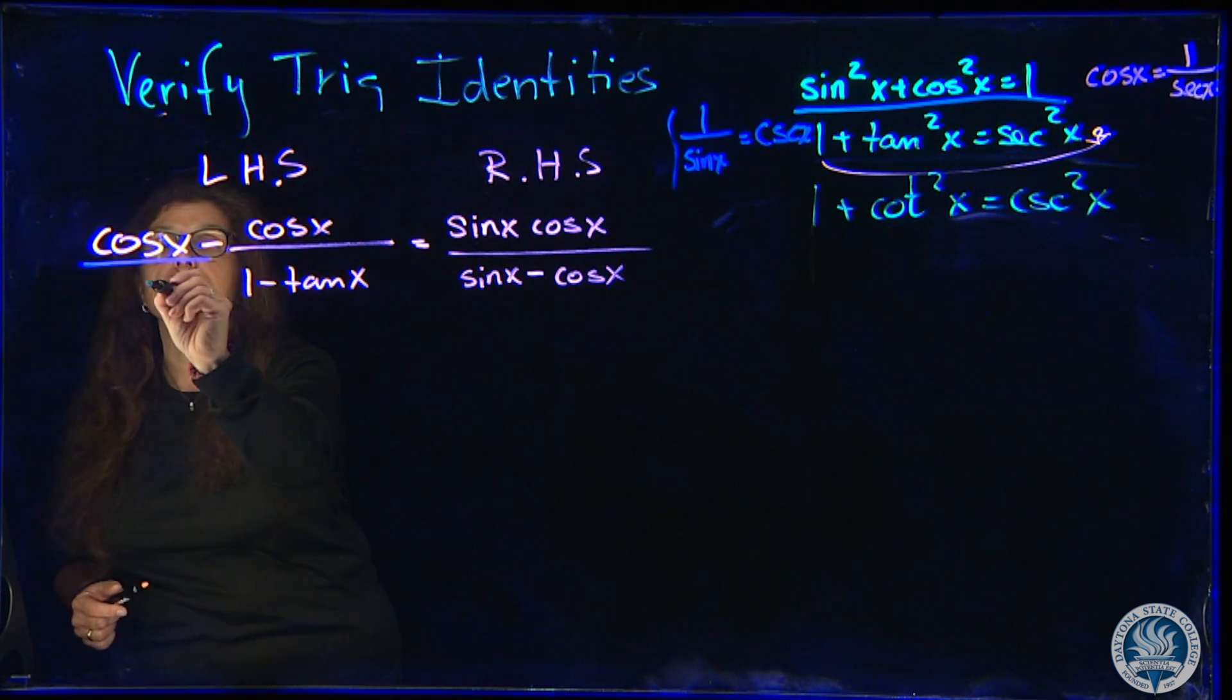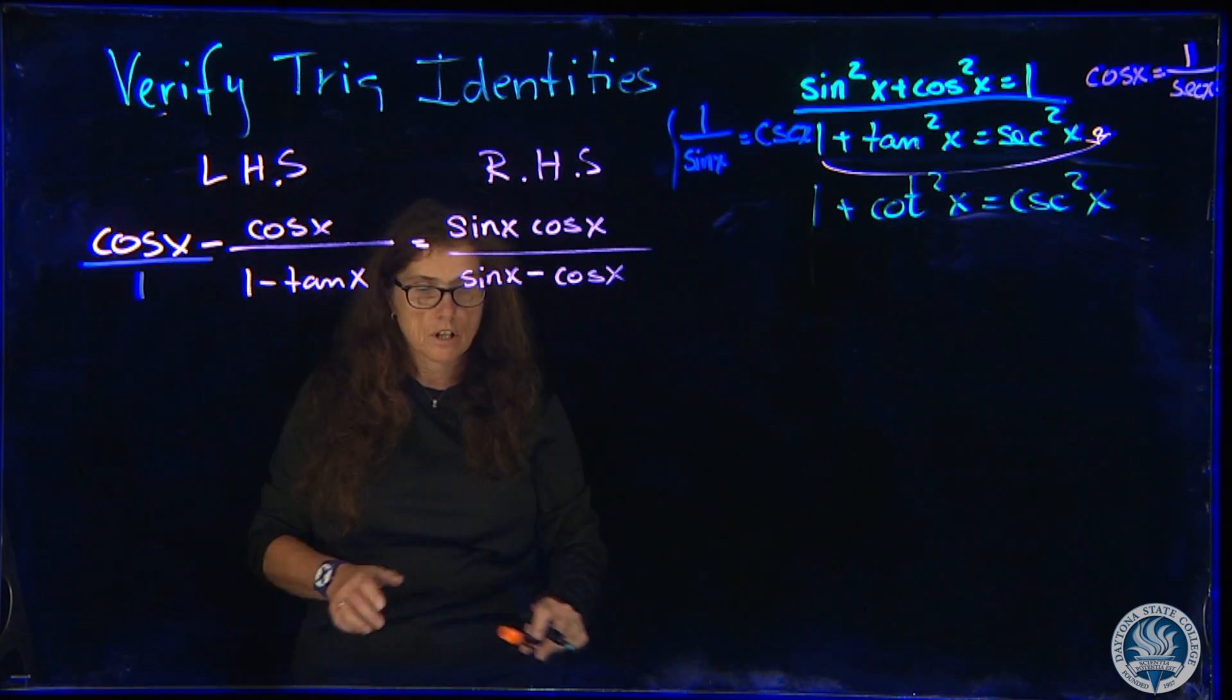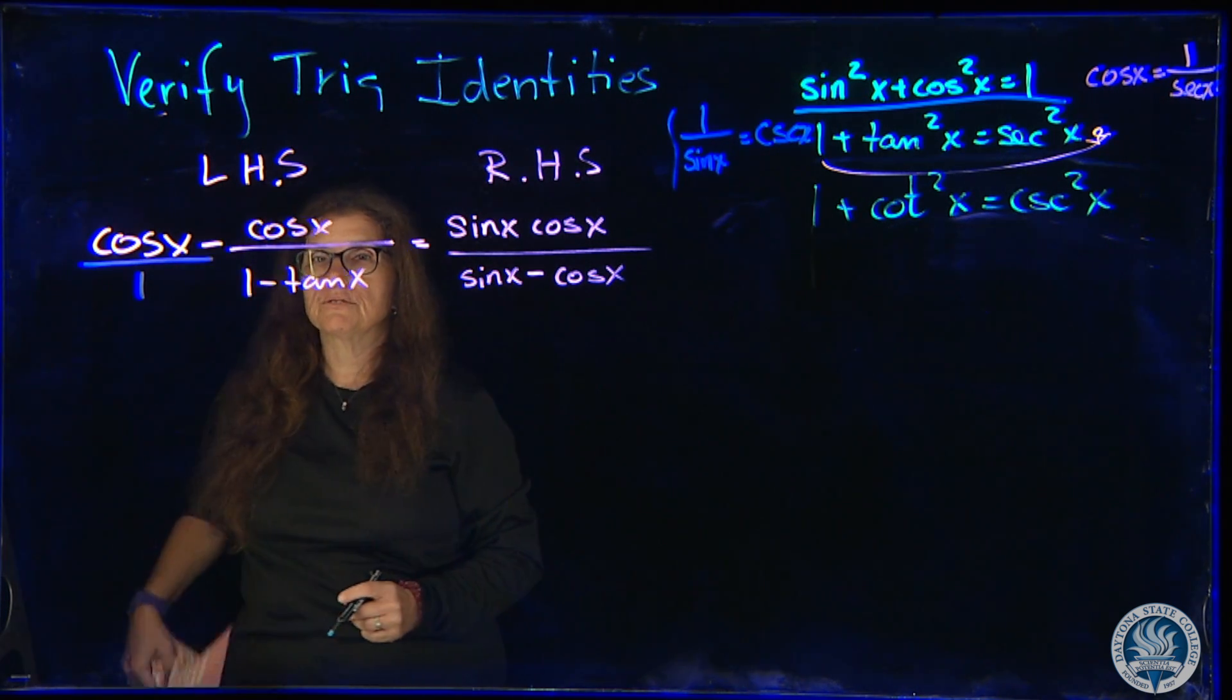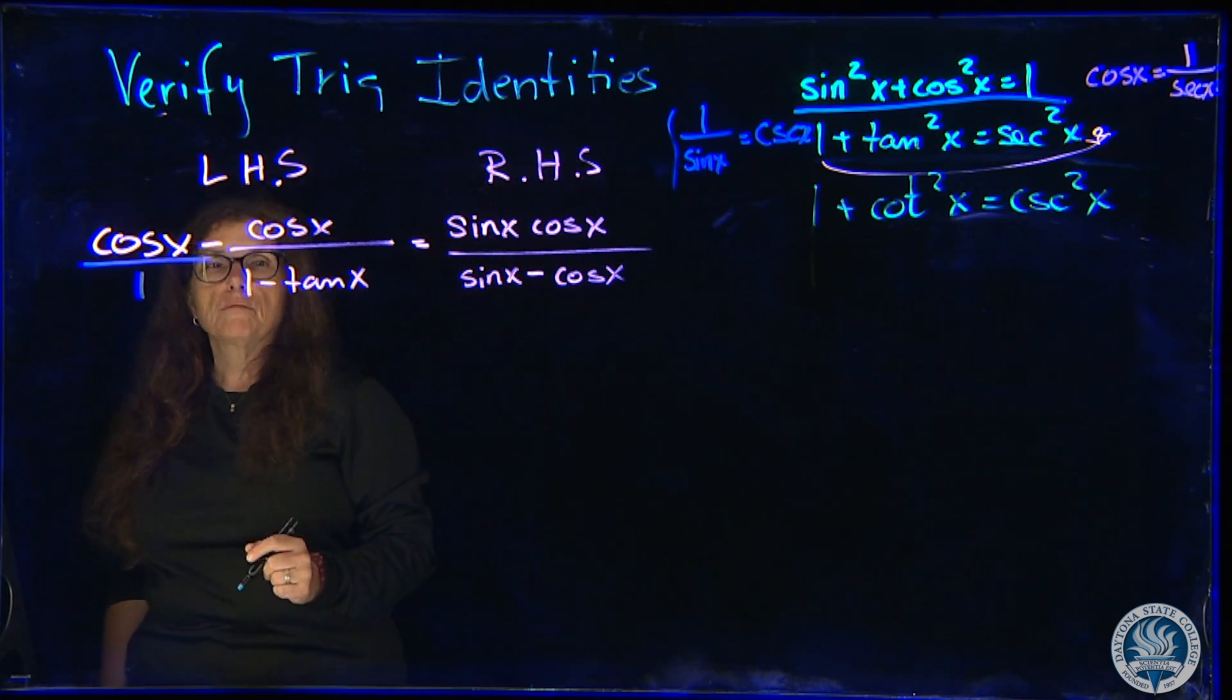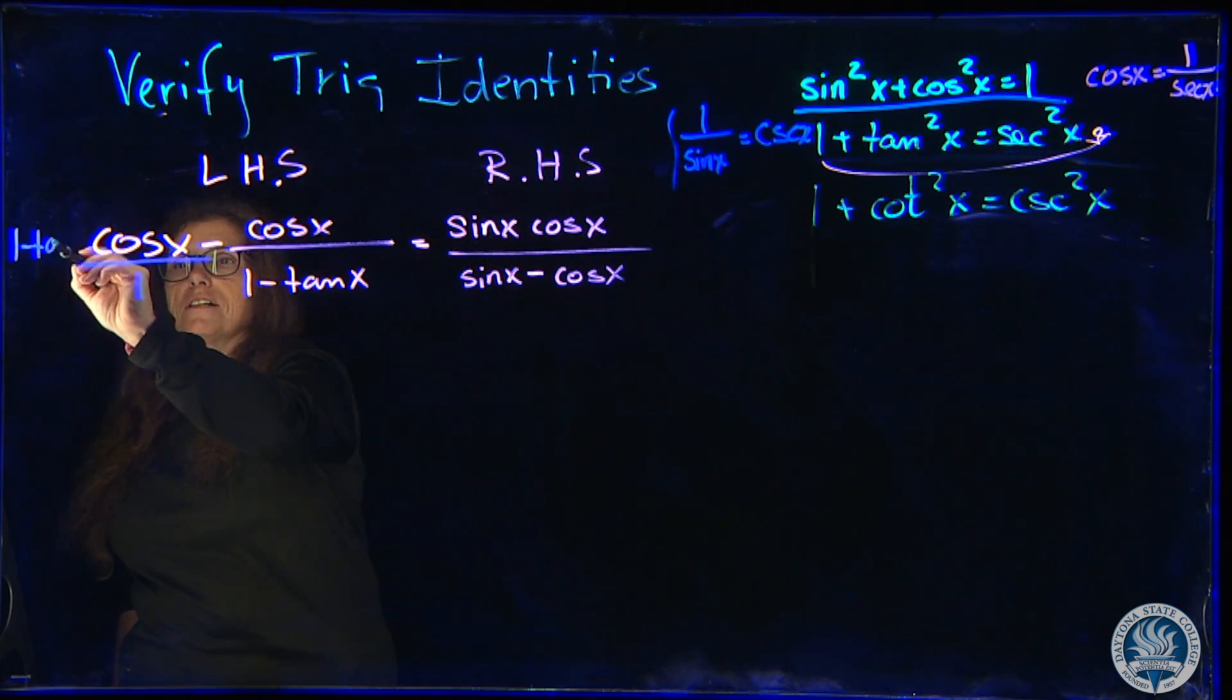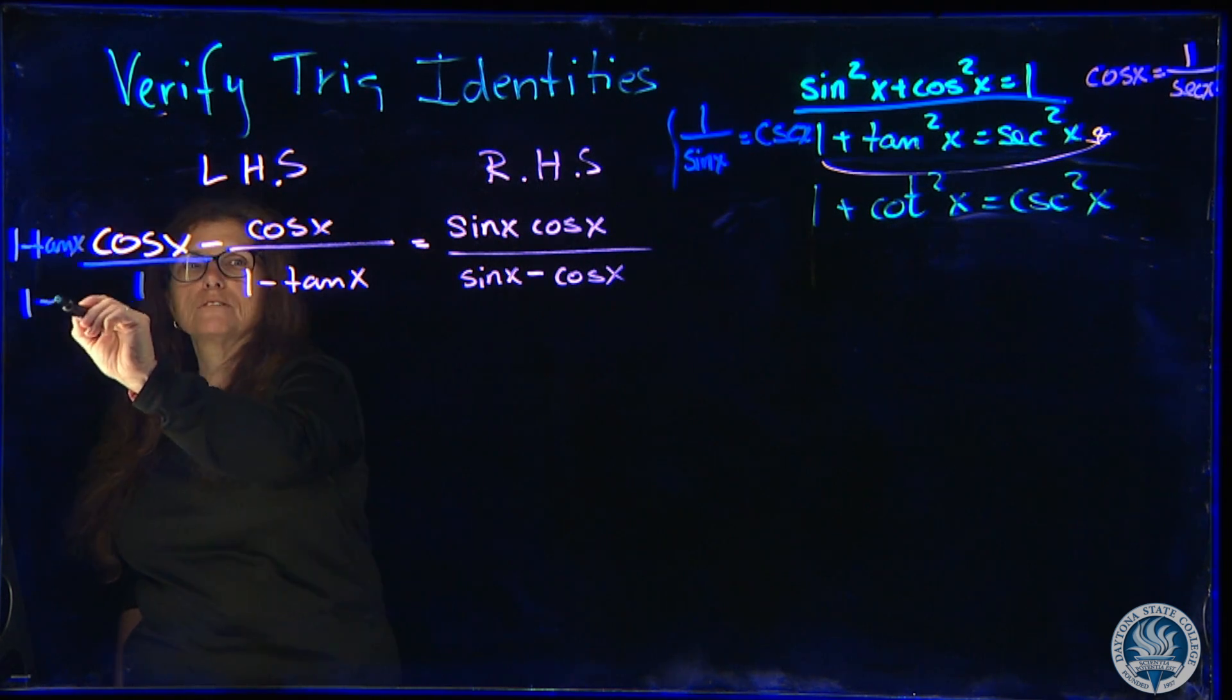Let's write this cosine x over 1. Of course, in order to add those two, we have to multiply by the least common denominator. In this case, that would be 1 minus tangent of x, 1 minus tangent of x.